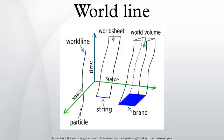In physics, the world line of an object is the path of that object in four-dimensional space-time, tracing the history of its location in space at each instant in time.